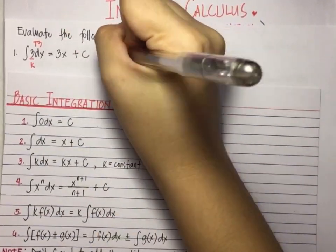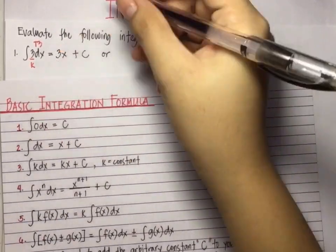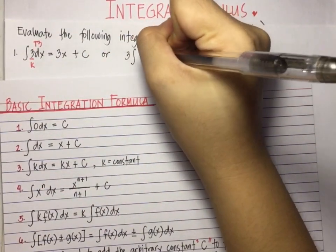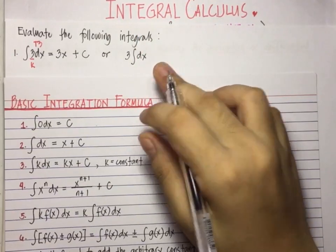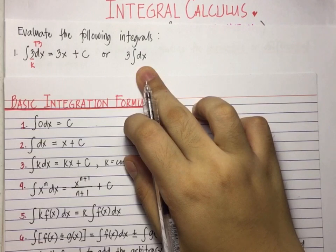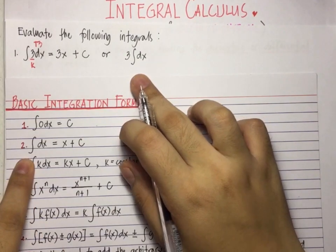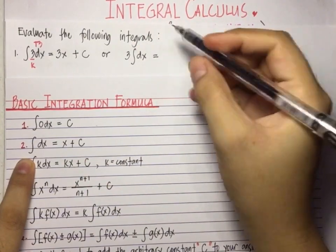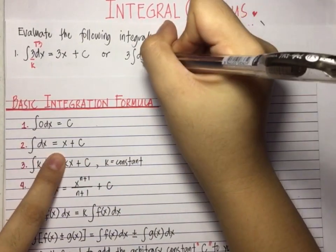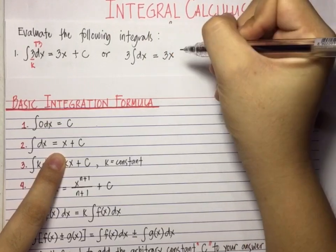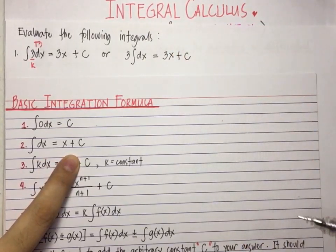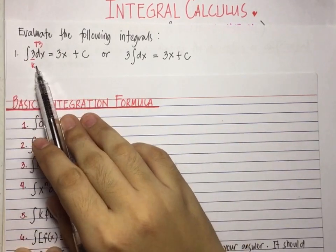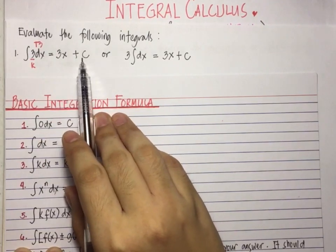Or, we can solve it by taking the constant 3 out of the integral first, then find the integral of dx. We apply theorem number 2. The integral of dx is just x. So this is equal to 3 times x, then plus c. The integral of 3 dx is equal to 3x plus c.